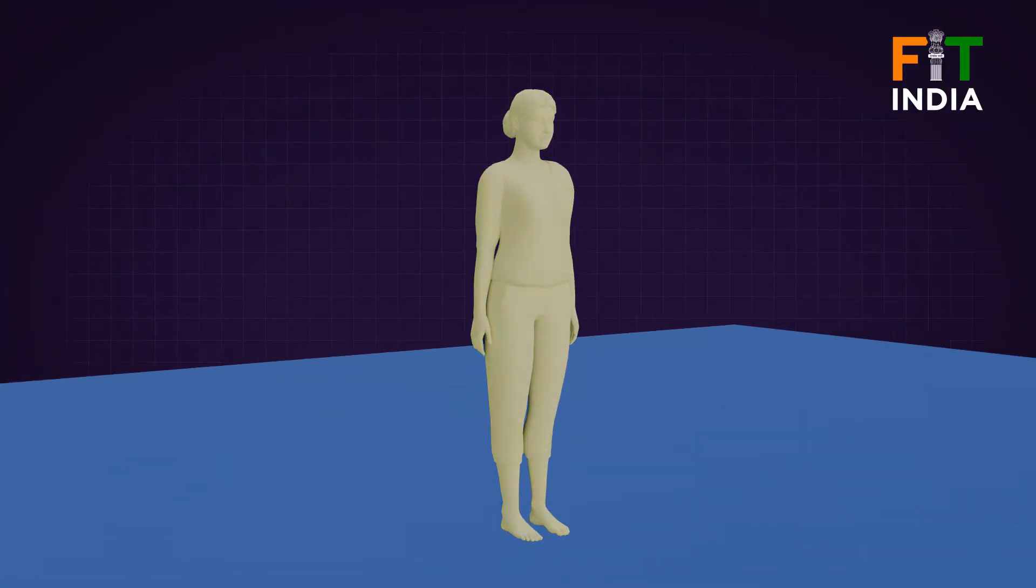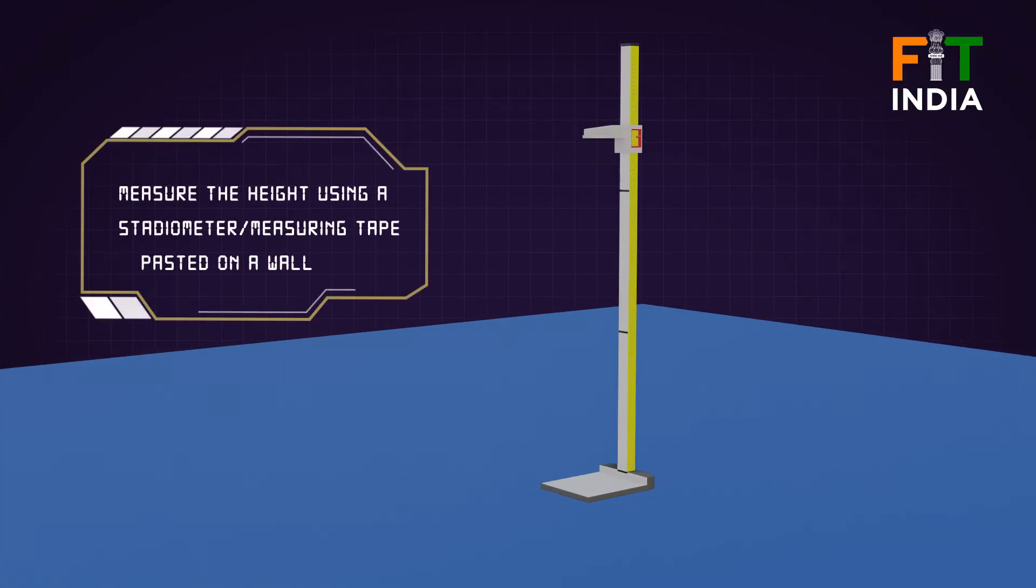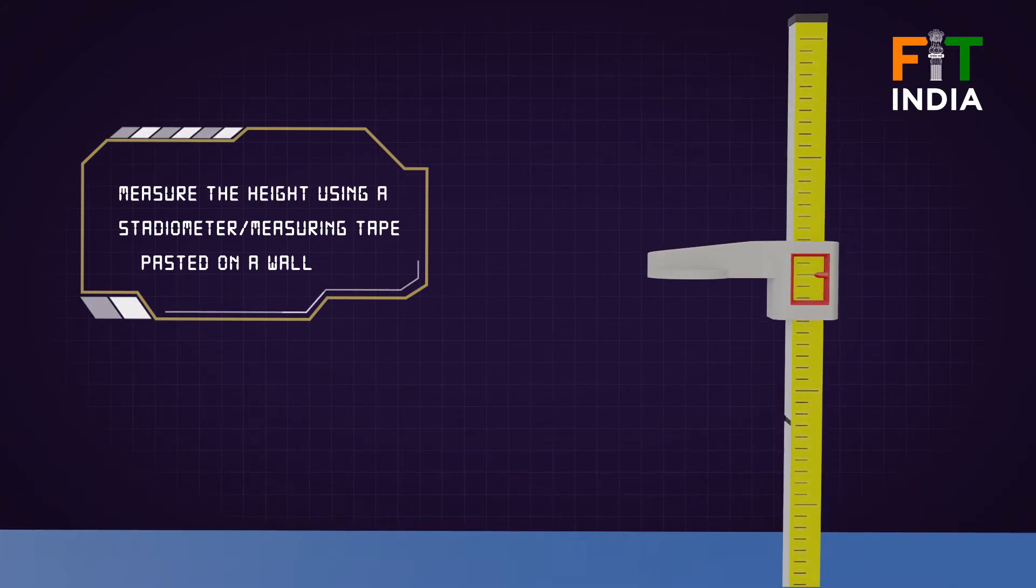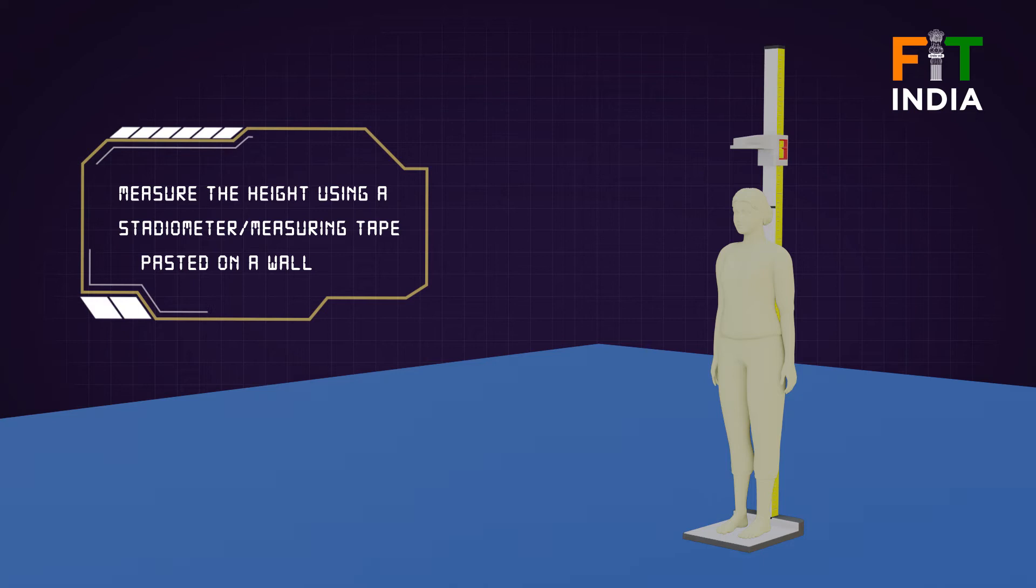To measure the height of an individual correctly, a stadiometer is required. If you do not have a stadiometer, your height can be measured by pasting a measuring tape against a wall and standing upright against the wall.